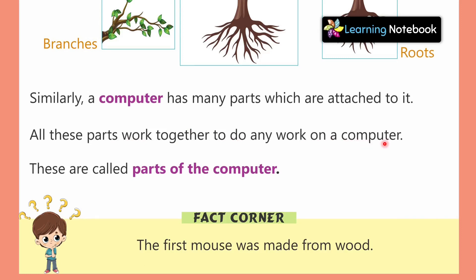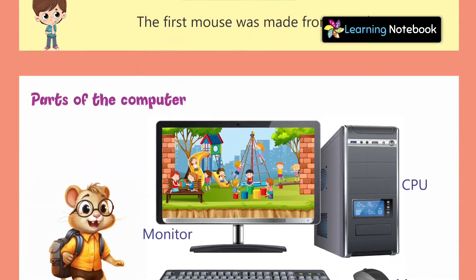Just as our different body parts work together to make our body function, similarly the parts of a computer work together, and only then can a computer work. These are called parts of the computer. Before we look at the parts, here is an interesting fact: the first mouse was made from wood. Yes, the very first computer mouse was made of wood. Now let me show you the different parts of the computer.